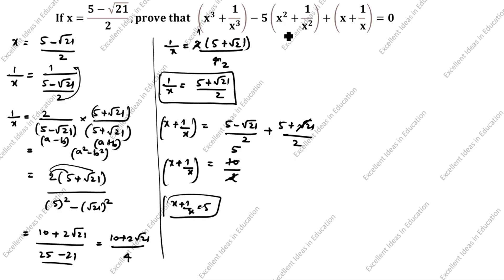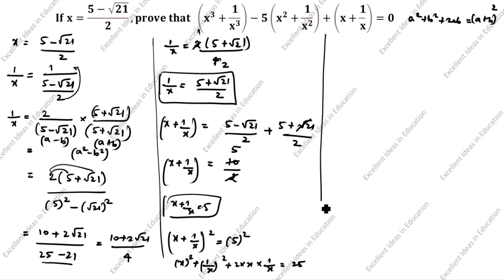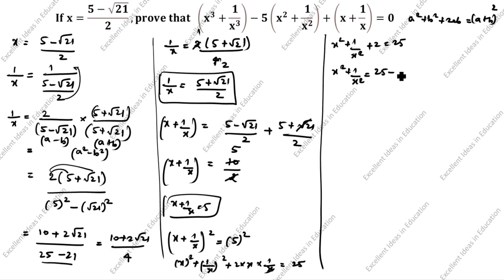Next we will find x² + 1/x². We square both sides: (x + 1/x)² equals 5², which is 25. Using the formula (a + b)² equals a² + b² + 2ab, we get x² + 1/x² + 2 times x times 1/x equals 25. So x² + 1/x² plus 2 equals 25, and therefore x² + 1/x² equals 23.